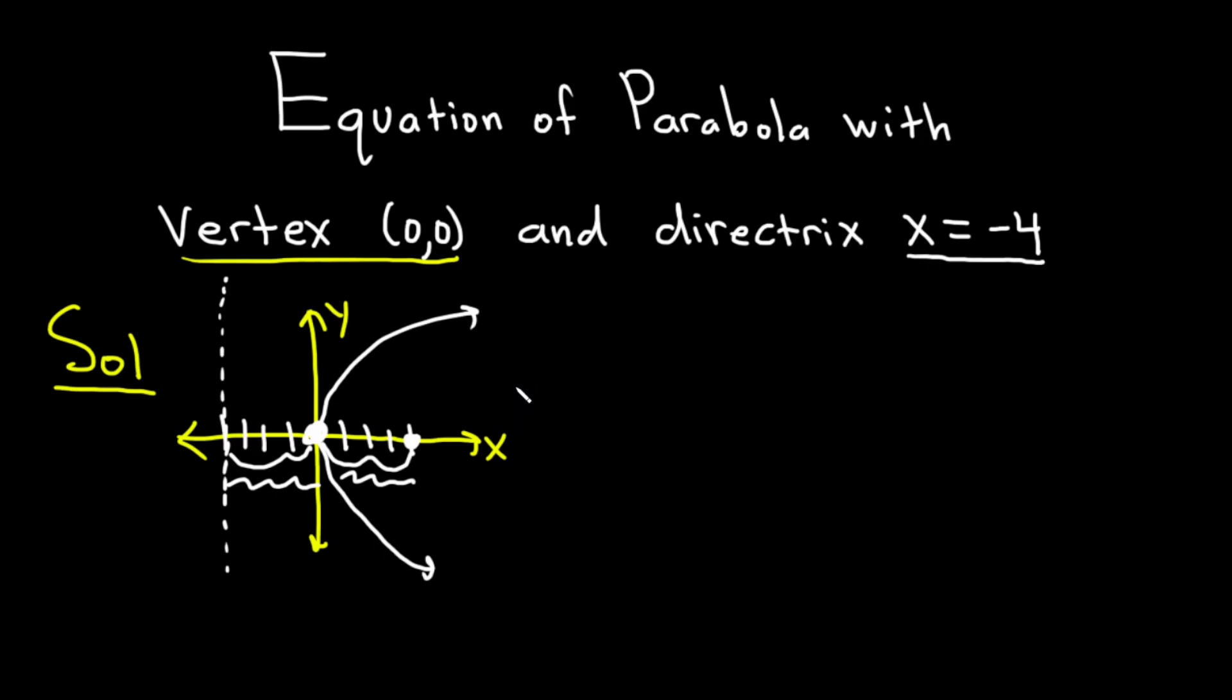So now because it opens right, we know that the formula we have to use is the one that has the y being squared in it. So parabolas that open left and right have a y squared term. So that formula is (y - k)² equals 4c times (x - h).